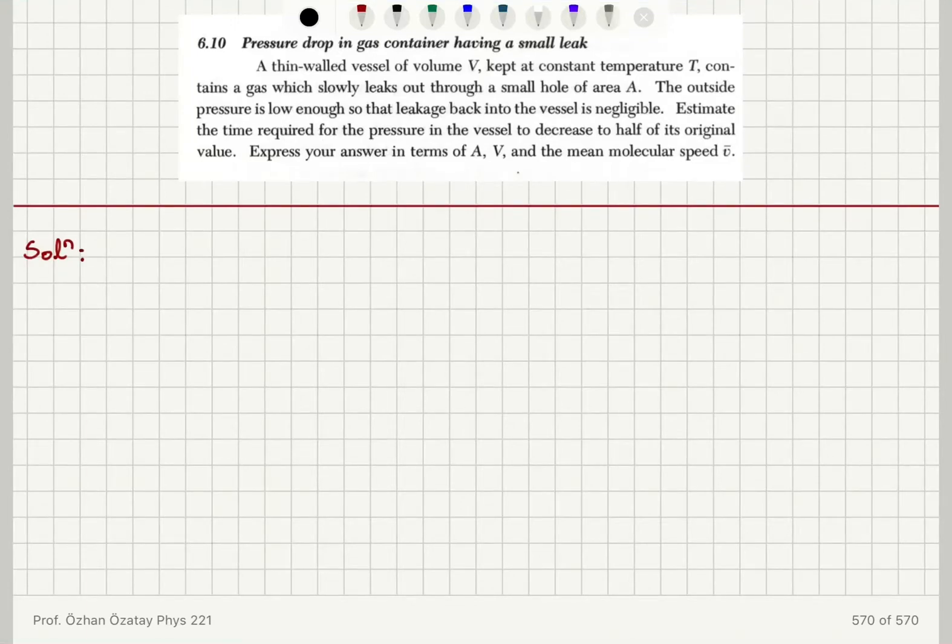Pressure drop in a gas container having a small leak. A thin-walled vessel of volume V, kept at constant temperature T, contains a gas which slowly leaks out through a small hole of area A.